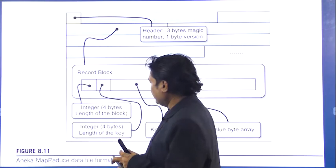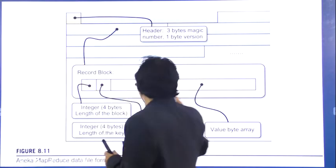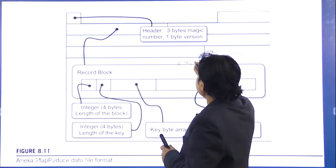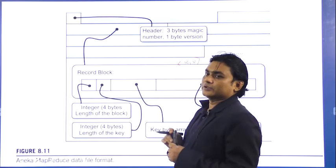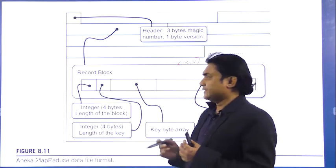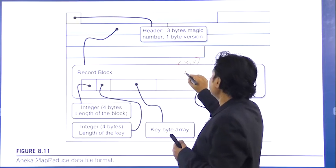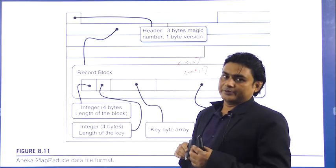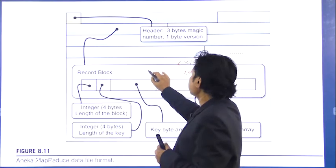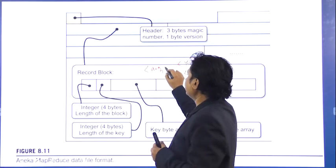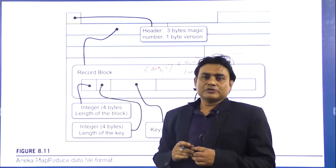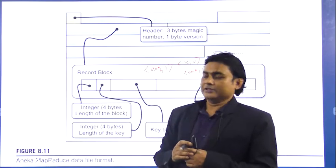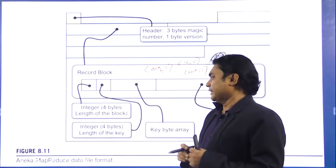We know that key-value pairs are always in the forms of a key and value pair. For example, if I write a word count program to count the number of words in a given text, the key may be a word like 'ket' and the value is 1, meaning 'ket' appears only one time. If I write 'dog' with value 3, it means 'dog' appears 3 times in the text. This is how data is represented in the forms of key-value pairs.